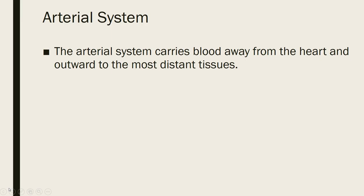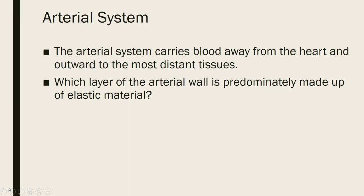The job of the arterial system is to carry blood away from the heart and outward to the most distant tissues. Our microcirculation goes from arteries to arterioles, capillaries, venules, veins, and then back to the heart. Which layer of the arterial wall is predominantly made up of elastic material? We have our tunica intima, tunica media, and tunica adventitia. The tunica media is the one that allows the arteries to contract with the heart — it's made up of a lot of elastic material.